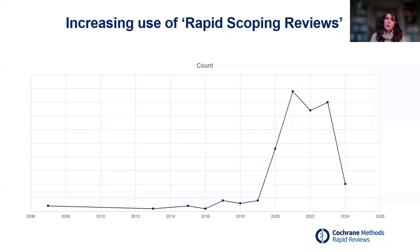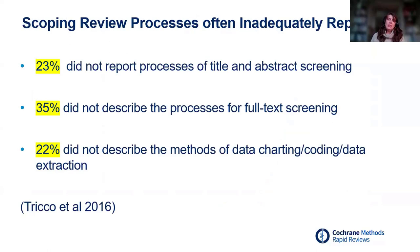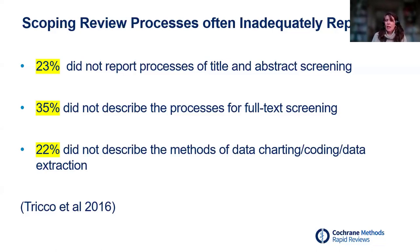We're seeing increasing use of the phrase 'rapid scoping reviews.' This is looking at results using that term in titles. I think this reflects not only more scoping reviews taking place but also the impact of the PRISMA reporting guidance. A scoping review of scoping review processes by Andrea Tricco and team found that actually one of the problems is quite often a lack of reporting — for example, the process of title/abstract screening was not reported in 23% of cases, and full text screening and data extraction methods were also often poorly reported.